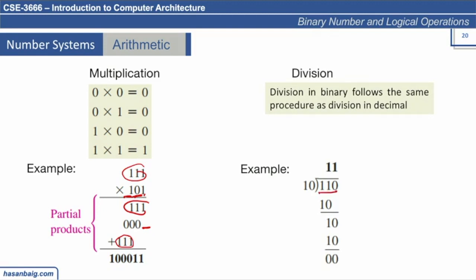For example, dividing 110 by 10: in decimal, 110 is six and 10 is two. When you divide, the first step results in cancellation down to zero, then one is brought down. Six divided by two returns the value three, which is perfectly correct.